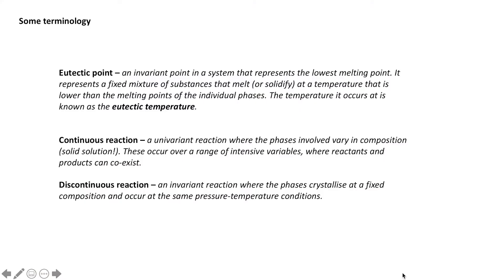To start off with some terminology, a eutectic point is an invariant point. If you think back to Gibbs phase rule, it means that we have a defined pressure and temperature. So we have our defined intensive variables. It's an invariant point in a system that represents the lowest melting point. It also represents a fixed mixture of substances that melt or solidify at a temperature that is lower than the melting points of the individual phases. The temperature it occurs at is known as the eutectic temperature.